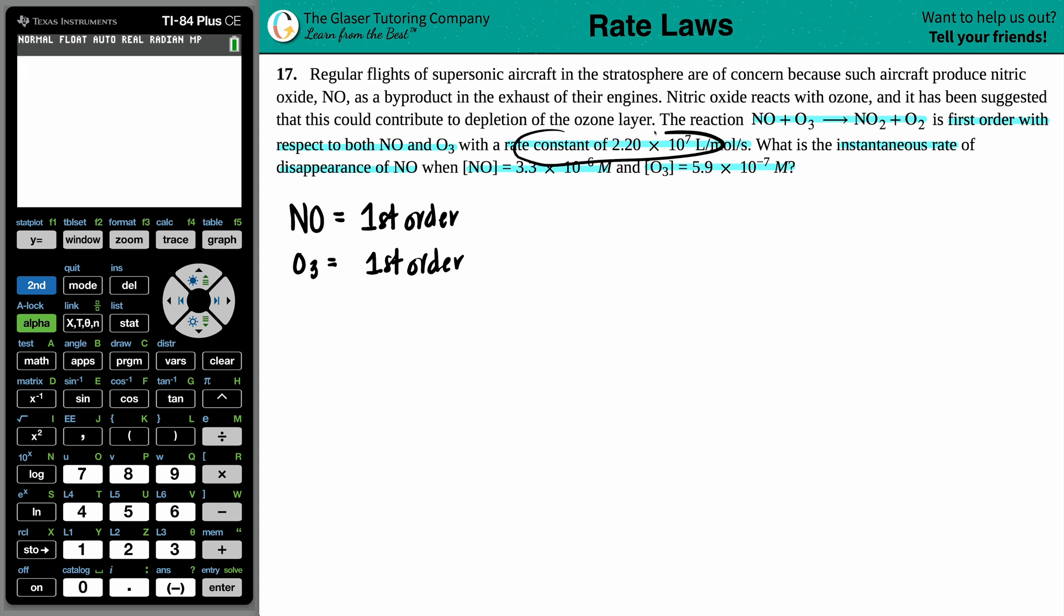They gave us a rate constant, which is always lowercase k. So whenever they say rate constant, that's lowercase k, and they told us that was 2.20 times 10 to the seventh. The units here are liter per mole times seconds. When you have a double slash, the last unit is also in the denominator, so you could group these as well.